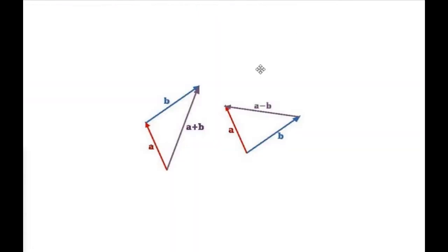And there is another picture to summarize these two operations. If I have vector A and vector B, then to get the A plus B vector, I put the start of the B vector at the end of the A vector. Then the A plus B vector will point from the start of A to the end of B. And for subtraction, if I have two vectors A and B, I make them start in the same position. Then the A minus B vector will point from the end of B to the end of A.